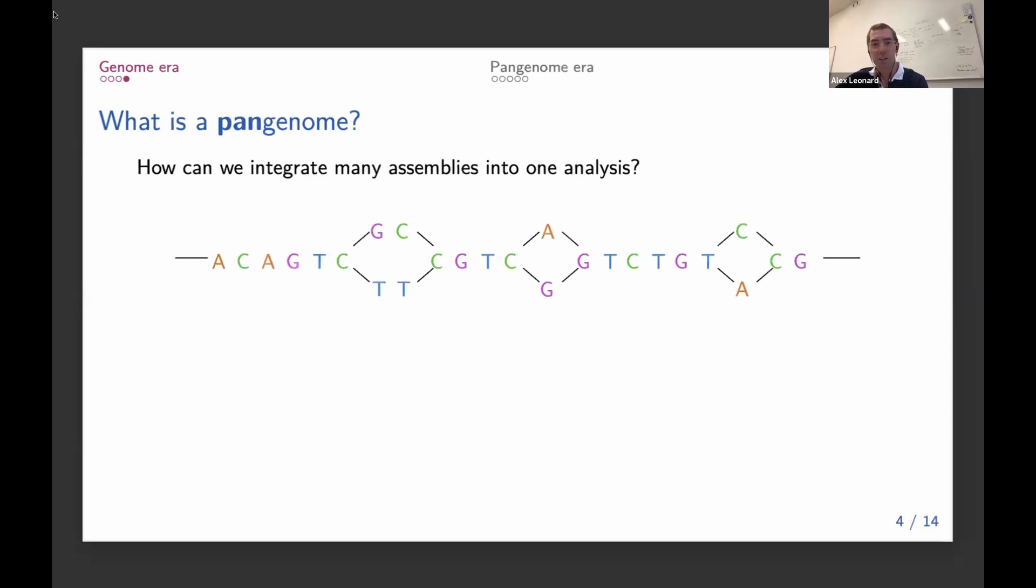So we can see if we go along this pangenome graph, if we took the top route, our sequence would have the GC type variant, and if we took the bottom path, it would have the TT type variant.